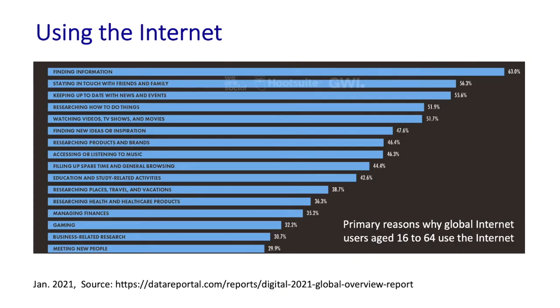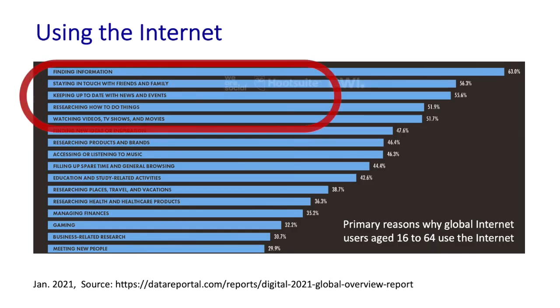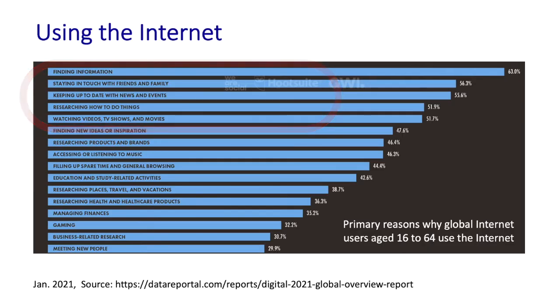Let's wrap up our discussion of who uses the internet with a few statistics on why people use the internet, what are the most popular applications, as well as internet access speeds in different countries around the world. Here's 2021 data from Data Reportal listing the top dozen or so most frequently cited uses of the internet — and there are probably no surprises here. Finding information, staying in touch with family and friends, keeping up to date with news and events, learning how to do new things, and watching TV shows, movies, and videos were all cited as primary uses by 50% or more of respondents.